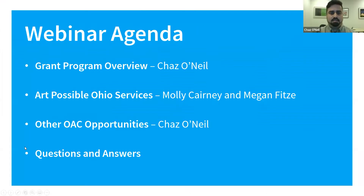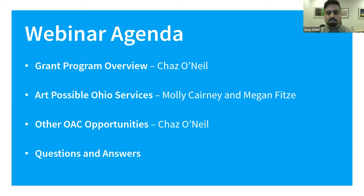Let's get started with our agenda. Today, we will cover four key topics about the ADAPT program. First, I will provide an overview about the grant program and how to find our guidelines and walk you through the definitions. Our friends Molly and Megan at Art Possible Ohio will walk you through the finer practical details and how they can help you apply. After that, I will show you how to submit your application in the RD system. Then I'll inform you about three other OAC opportunities for individual artists, and finally we will take questions.